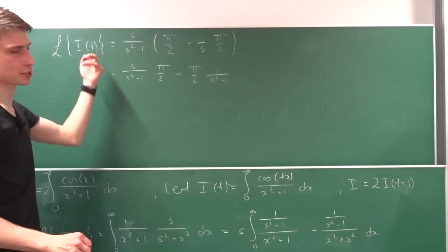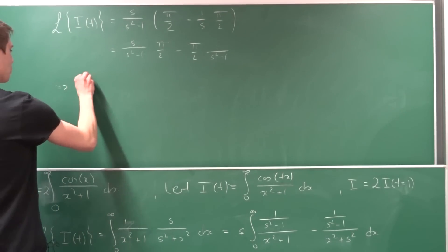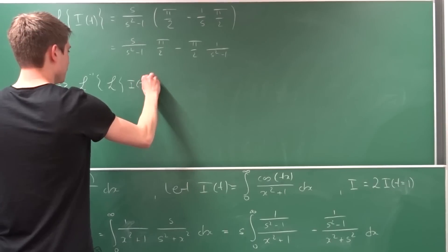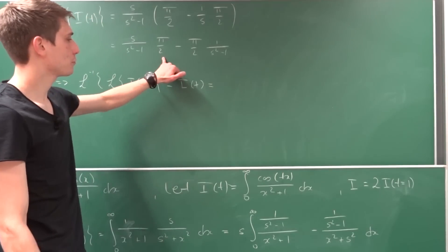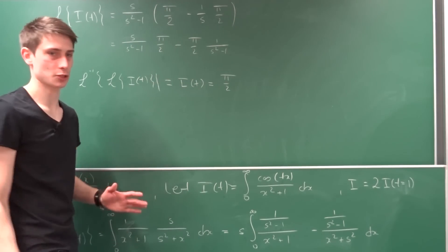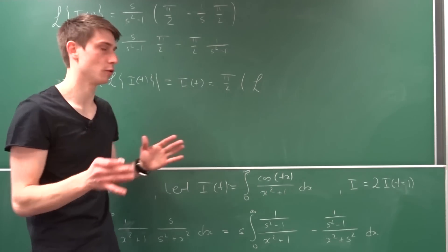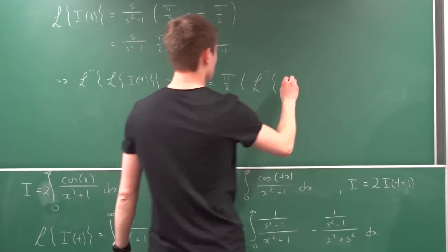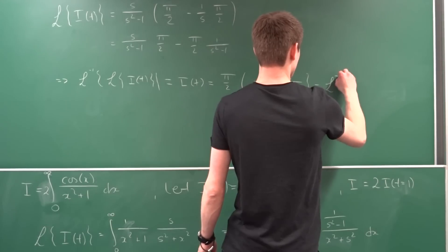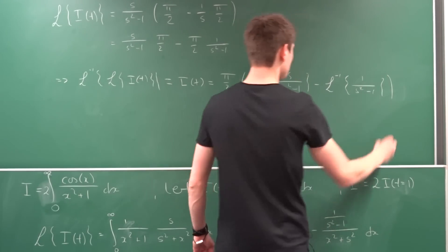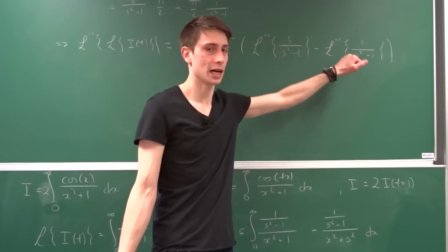Now we want to get back to I in terms of t, which means we need to apply the inverse Laplace transform. The inverse Laplace transform of the Laplace transform of I(t) is just I(t). We pull out the common factor pi over two using linearity, and split the sum: we have the inverse Laplace transform of s over (s squared minus 1) minus the inverse Laplace transform of 1 over (s squared minus 1).